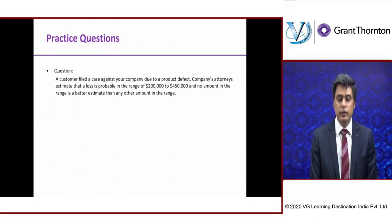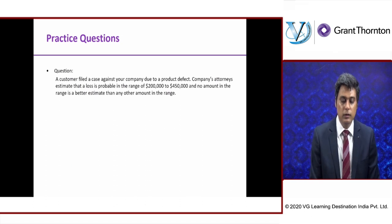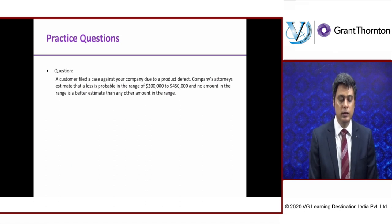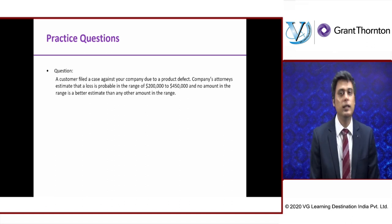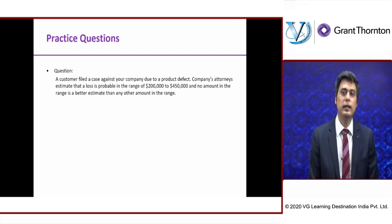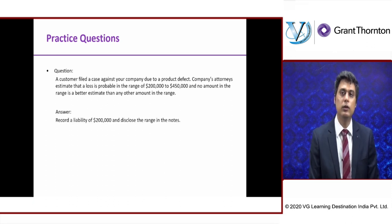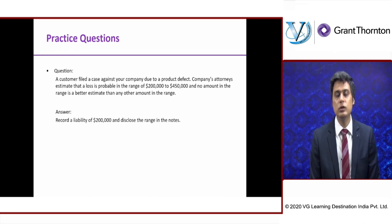Question 3: A customer filed a case against your company due to a product defect. Attorneys estimate a loss is probable in the range of $200,000 to $450,000, and no amount in the range is a better estimate than any other. In that case, take the minimum value in the range, which is $200,000. But in the notes, give the entire range.